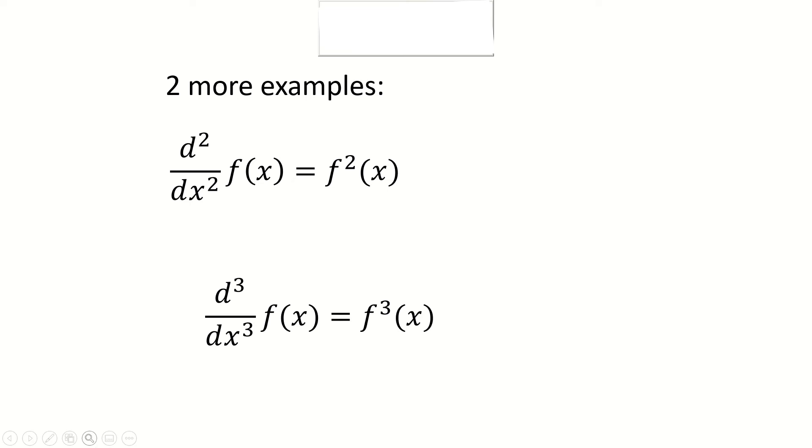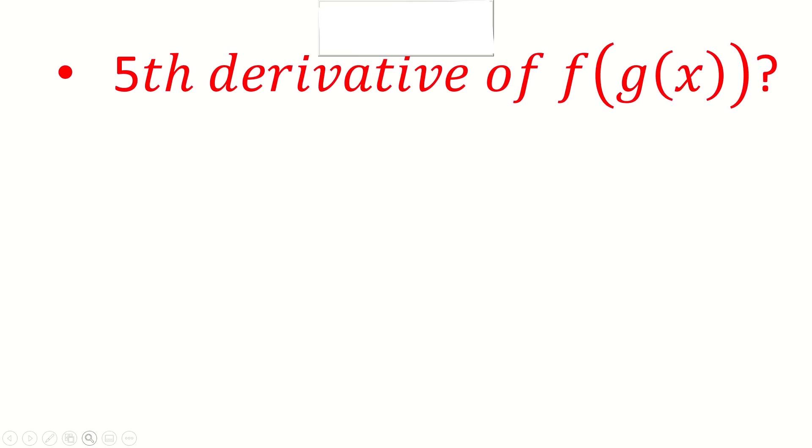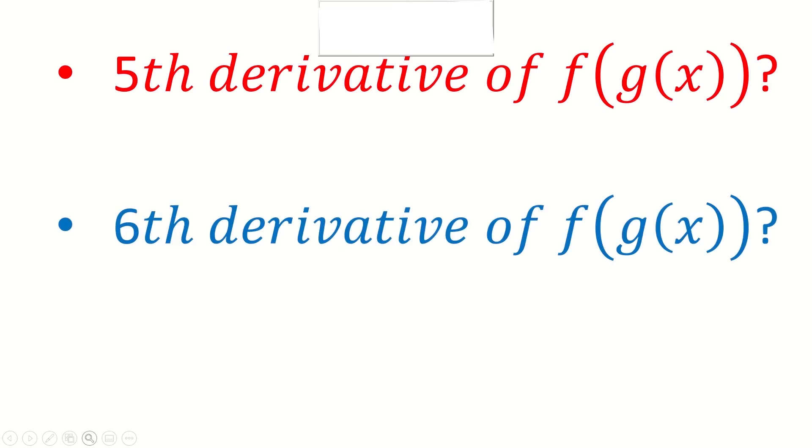Now back to finding nth derivatives. It would be very tedious if we had to find the fifth or the sixth derivative of a function composition like f. We would have to apply the product and chain rules over and over again. Thankfully, there's an easier way to do it: Faa di Bruno's formula.